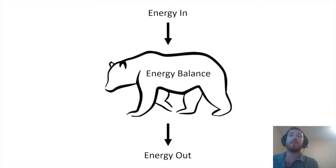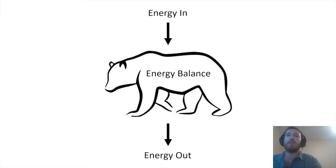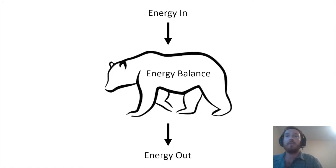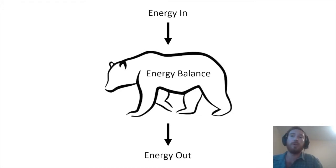Metabolic rate is a fundamental property that reflects the total energy demand for all aspects of organismal function, anything from immune performance to reproduction. Energy balance is determined by the total amount of energy an animal consumes and how much they expend. Survival and reproduction depend heavily on an animal maintaining this energy balance, so metabolic rate is incredibly important.